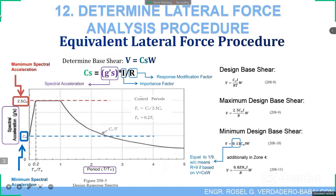For the minimum design base shear, the spectral acceleration is CA multiplied by the importance factor I, over R — where R equals 9 — times the seismic weight W. For the maximum design base shear, the spectral acceleration maximum is 2.5CA, multiplied by I over R, times W. For the standard design base shear, the spectral acceleration is CV over T, multiplied by I over R, times W.